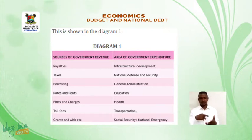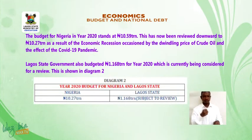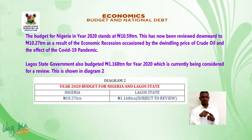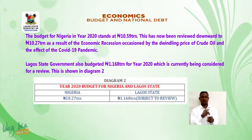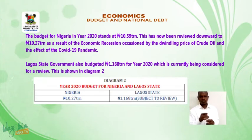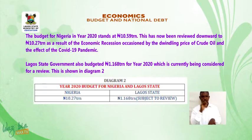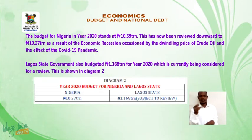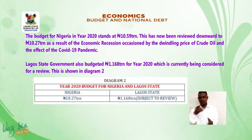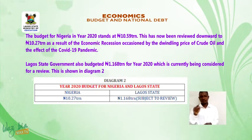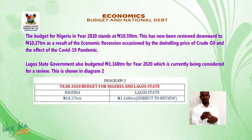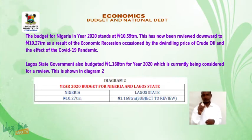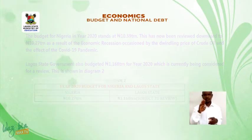The budget for Nigeria in the year 2020 stands at 10.59 trillion naira, however being reviewed downward to 10.27 trillion naira as a result of the economic recession occasioned by the dwindling price of crude oil and the effect of the COVID-19 pandemic. Lagos State government also budgeted 1.168 trillion naira for year 2020, which is currently being considered for a review, as shown in Diagram 2.